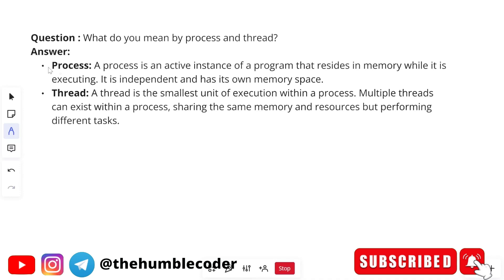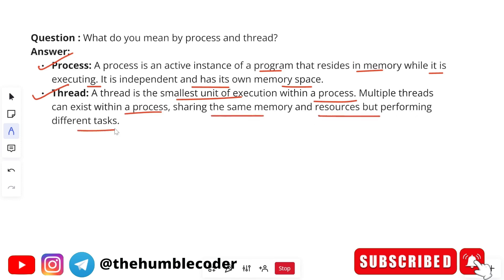Next question: What do you mean by process and thread? This is a question from operating systems. A process is an active instance of a program that resides in memory while it is executing — it is independent and has its own memory space. A thread is the smallest unit of execution within a process. Multiple threads can exist within a process, sharing the same memory and resources but performing different tasks.